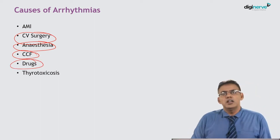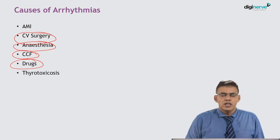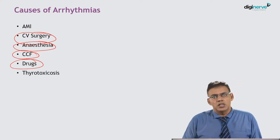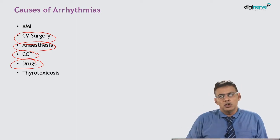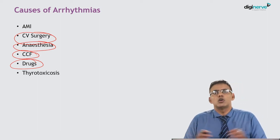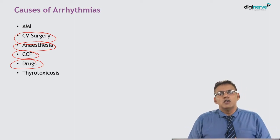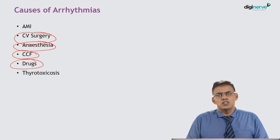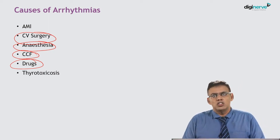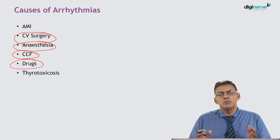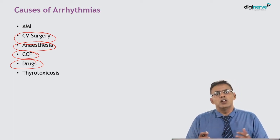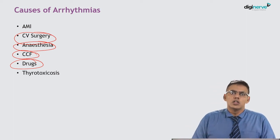Arrhythmias can also be caused by various drugs. The drugs used to treat arrhythmias are also called double-edged weapons — not only are they used in the treatment of arrhythmias, but they themselves can also produce arrhythmias. One of the more notorious drug-induced arrhythmias is QT prolongation, also called torsades de pointes. A number of drugs have been withdrawn from the market because of this potentially fatal risk. You must remember, from an examination standpoint, the drugs responsible for causing QT prolongation and the drugs used in the treatment of torsades de pointes.